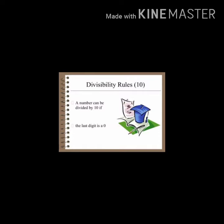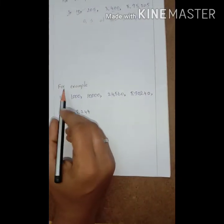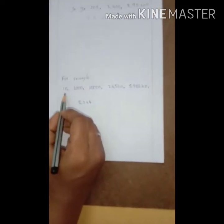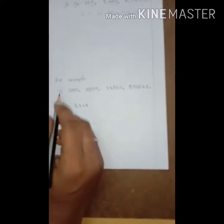Next, we are going to discuss the divisibility rule by 10. A number can be divisible by 10 if the last digit is 0. If the last digit is 0, the number is divisible by 10; otherwise, it is not divisible by 10. Are you understanding, children? The last digit must and should be 0.